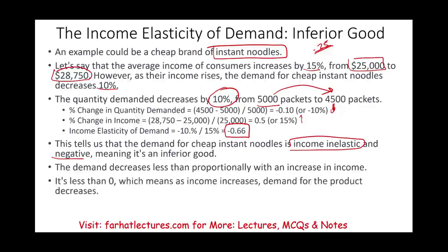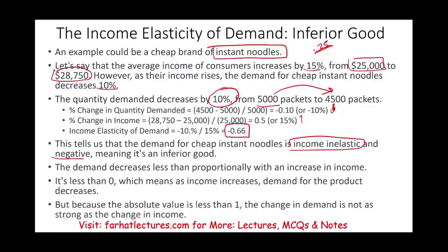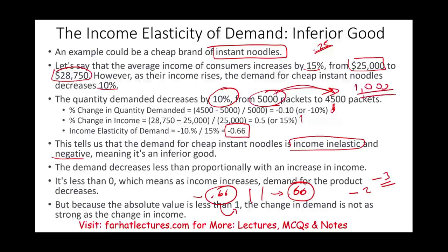The demand for the product is decreasing. The absolute value of the answer is 0.66, which is less than one — so the change is not as strong as the change in income. We have less demand for instant noodles, but the change is not that high. We are consuming less cheap instant noodles, but not drastically. If the income of this group goes up further — say, doubling to $50,000 — then you might cut down substantially, and maybe only 1,000 of the original 5,000 packets would be purchased.